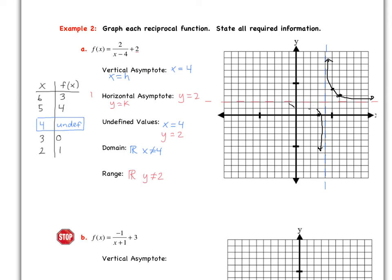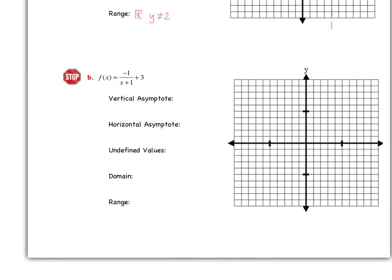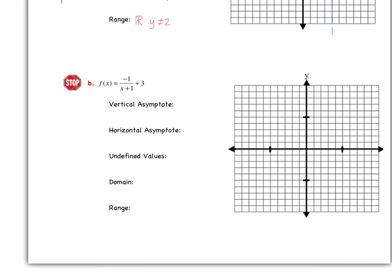We never cross the asymptotes. We have to create a table of values — the rule of thumb is two points per branch. If you put the undefined x value right in the middle of your table and pick two points on each side, that should cover your branches just fine. Now go ahead and try this second example on your own, and after you give it a shot, take a look and see what I got.